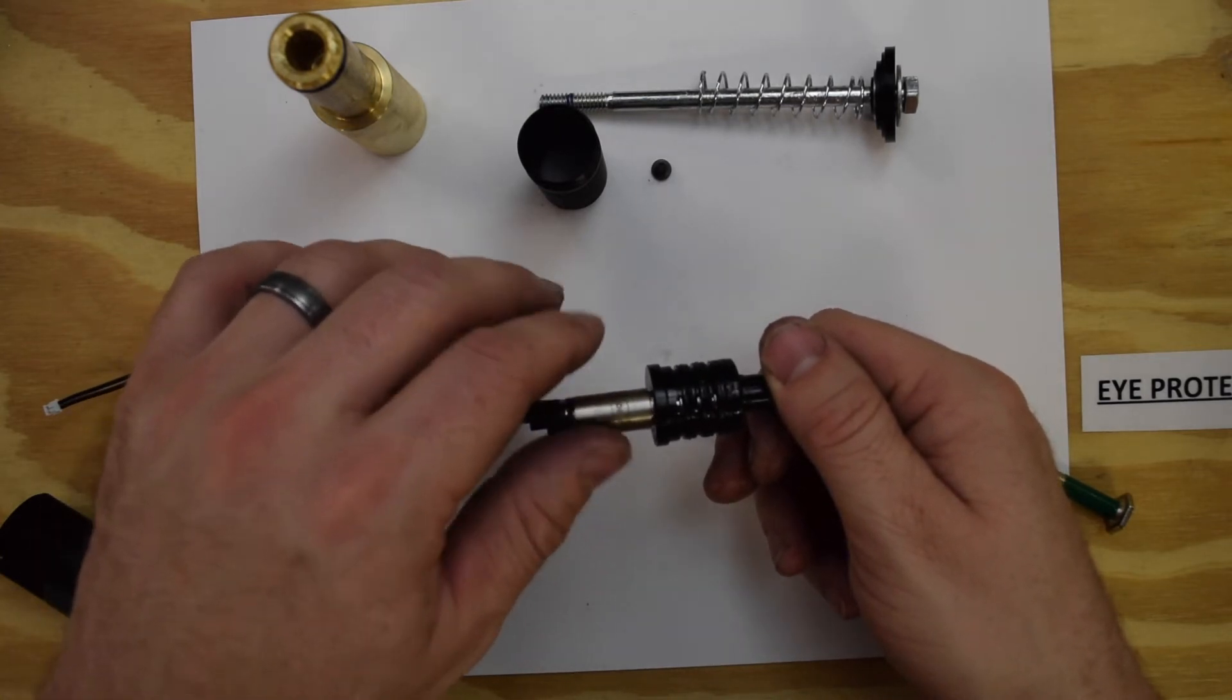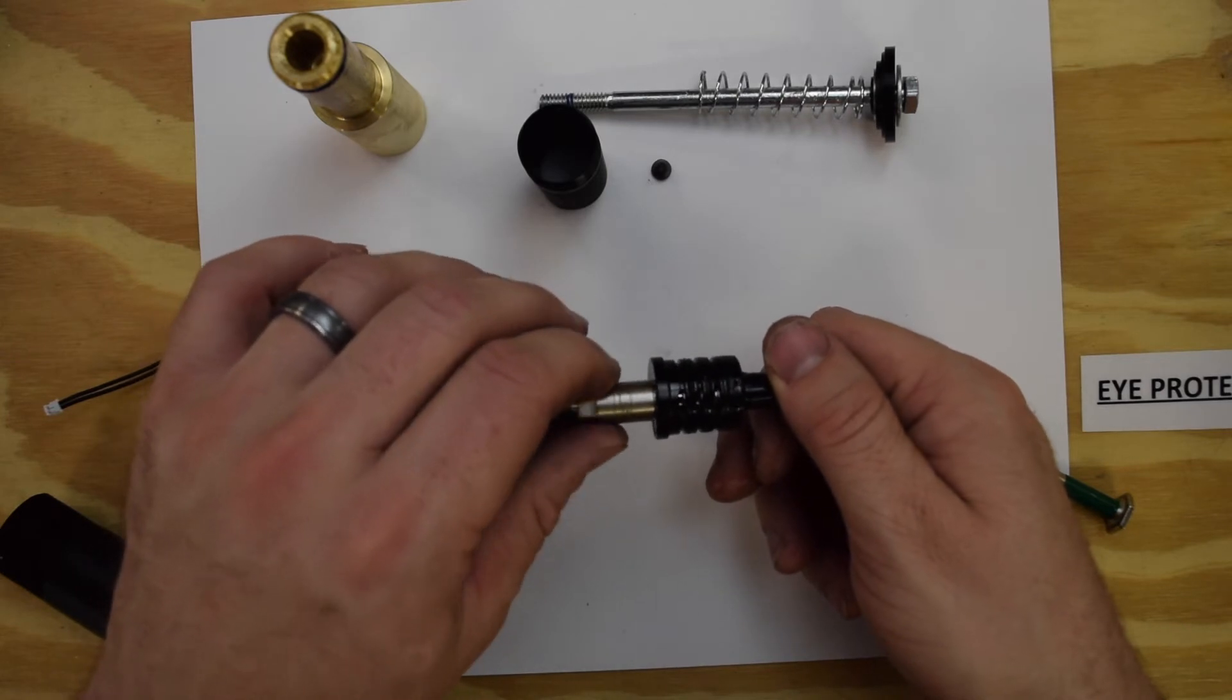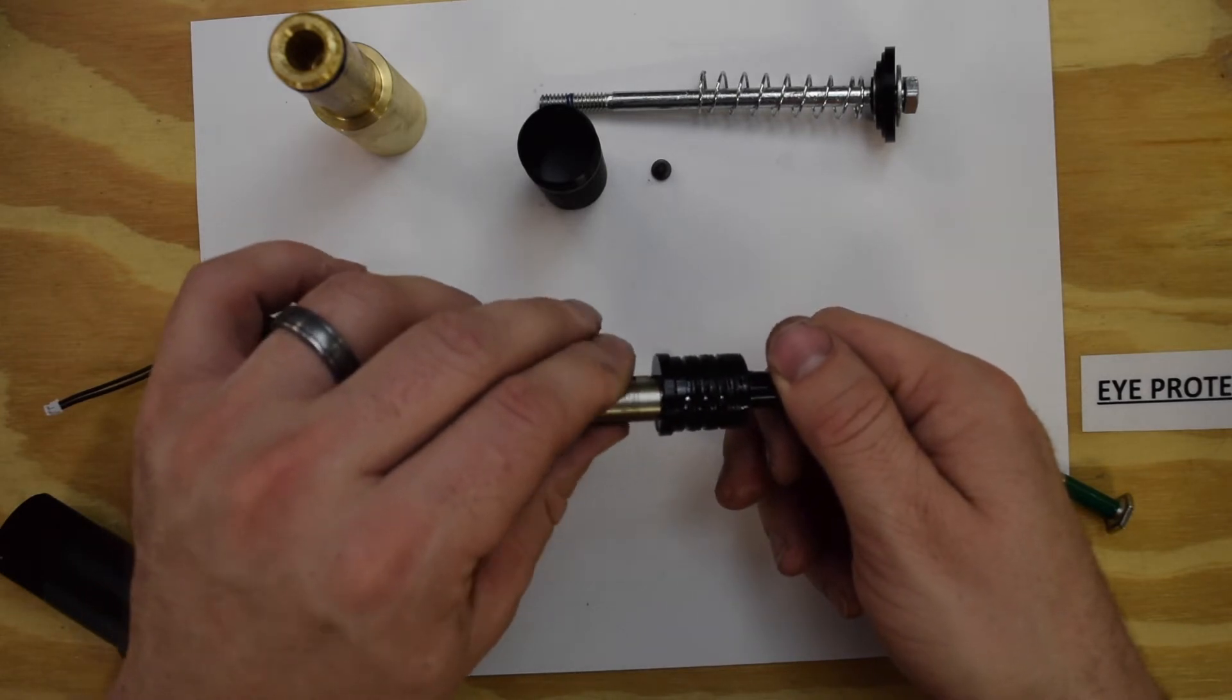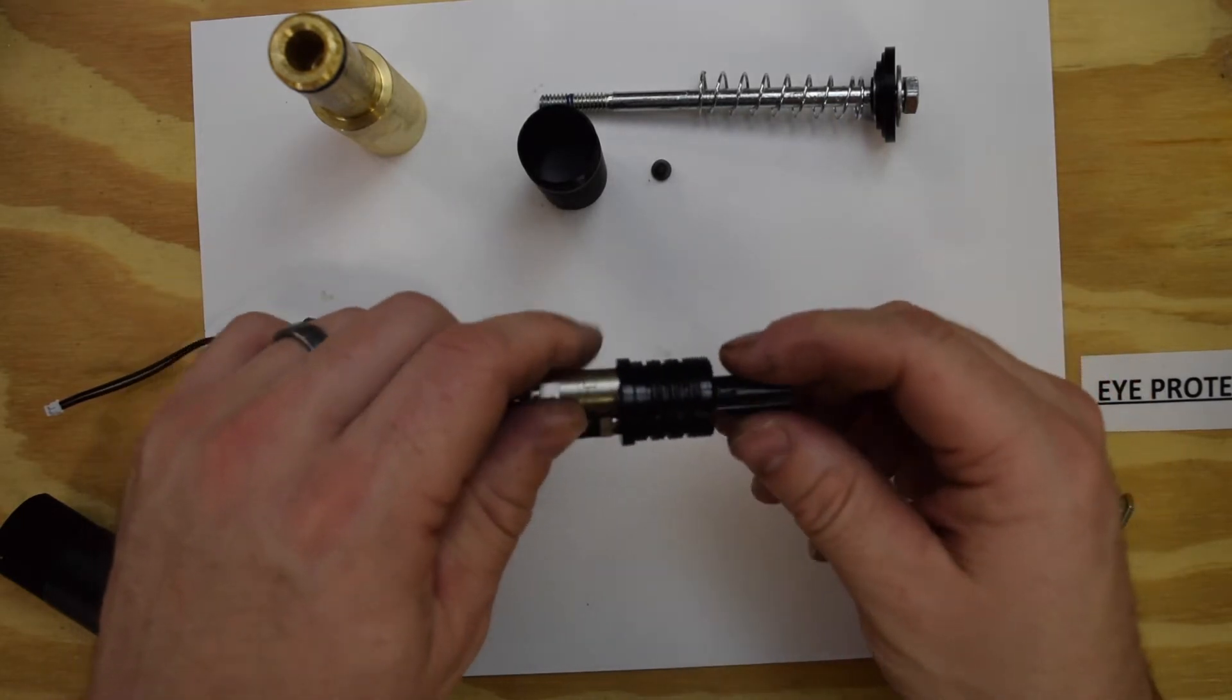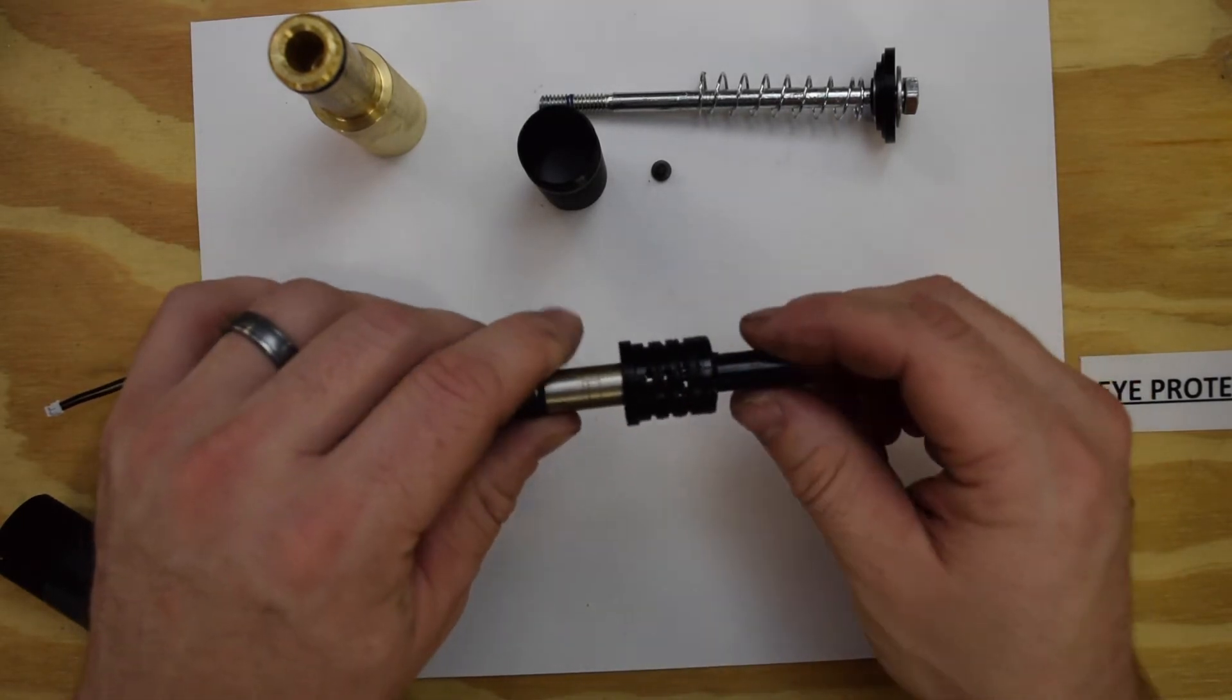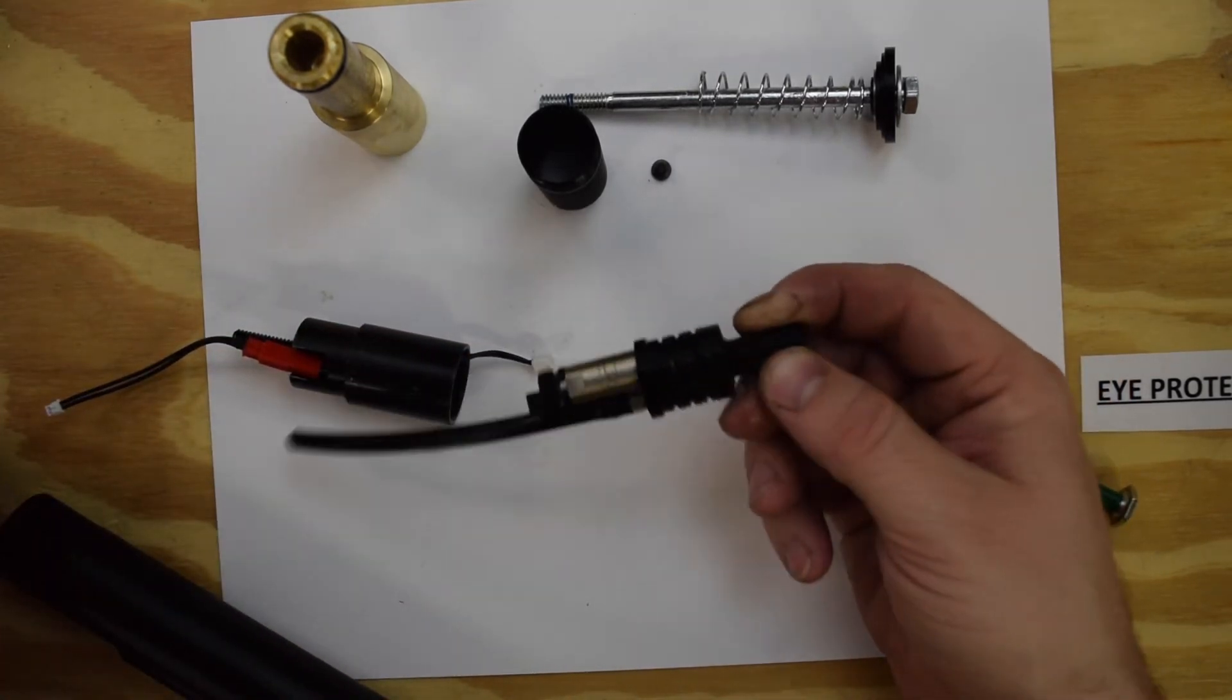Just be very gentle in screwing it back in and make sure that you don't feel any binding at all. If you feel any binding, back it up a little bit and work it until everything goes in nice and smoothly. Lubricate those o-rings a little bit before you put them back together again just to make sure you don't damage an o-ring.